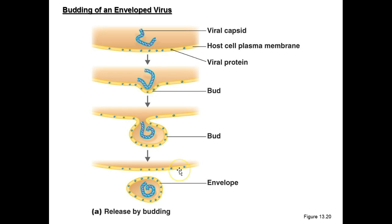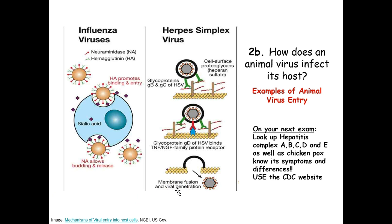Now disguised with the host cell's coating, the virus goes and finds another cell, docks to it, and says 'I'm friendly, let me in.' The new cell sees all the right sugars indicating it's a human liver cell and says 'sure, you're friendly, let's fuse together.' During that fusion process, the virus then unleashes its genetic material into the new cell.